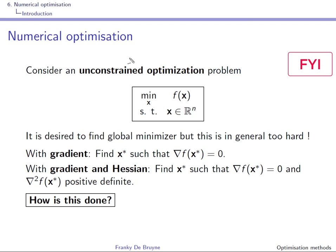We will only deal with unconstrained optimization problems, but if you want to apply these ideas to other problem types, here is something for your information. If you have a problem of the type: minimize f(x) subject to h(x) ≤ 0, you could use a so-called log barrier function.